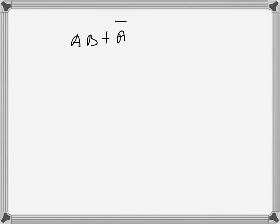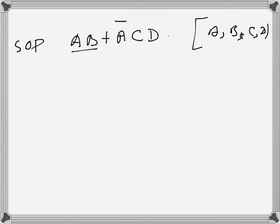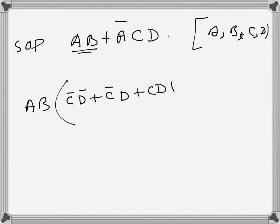Similarly, if we have another expression: a·b + a-bar·c·d, this is another SOP and we have to express it as the standard sum of products. The domain here is a, b, c, d — so each product term must include all four variables. The term a·b needs c and d incorporated, giving a·b·c-bar·d-bar + a·b·c-bar·d + a·b·c·d + a·b·c·d-bar.